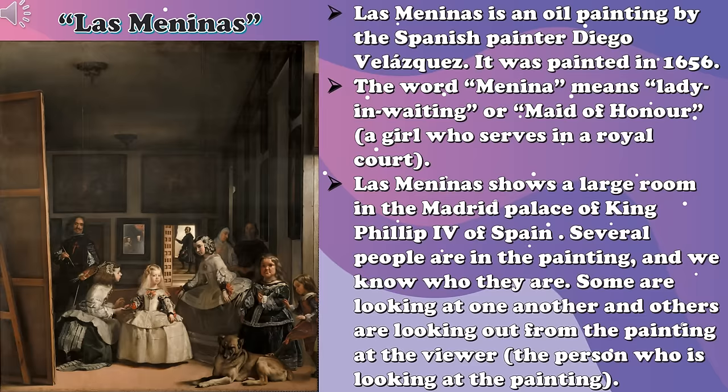One of Velázquez's best-known works is Las Meninas. It was painted in 1656. The word Menina means lady-in-waiting or maid of honor, who is a girl that serves in a royal court. Las Meninas shows a large room in the Madrid Palace of King Philip IV of Spain. Several people are in the painting, and we know who they are. Some are looking at one another, and others are looking out from the painting at the viewer.